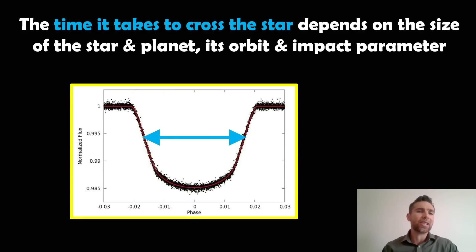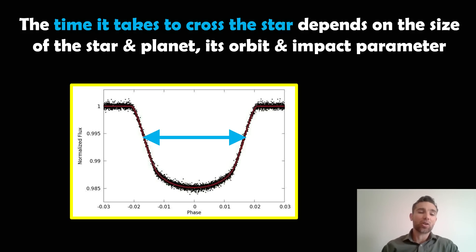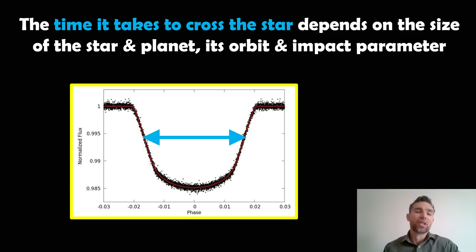If you've seen some of my other videos, you'll understand the transit method. But basically, as a planet passes in front of the star, we get a dip in the brightness — typically a U-shaped dip. On this plot here, we've got the brightness of the star denoted as the normalized flux, and the phase along the bottom is essentially just the time. A faster planet gives a more narrow U-shaped dip; a slower planet, further out on its orbit, gives a much wider dip. If we know things like the size of the planet, the size of the star, and its orbit, we can calculate the transit duration.